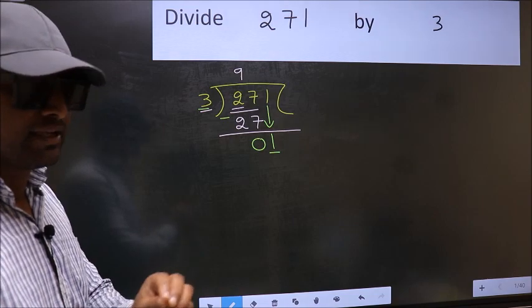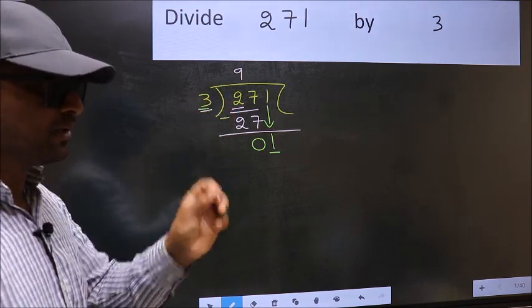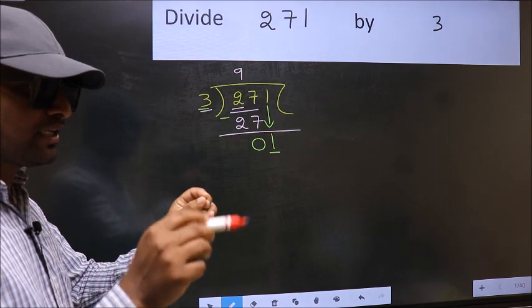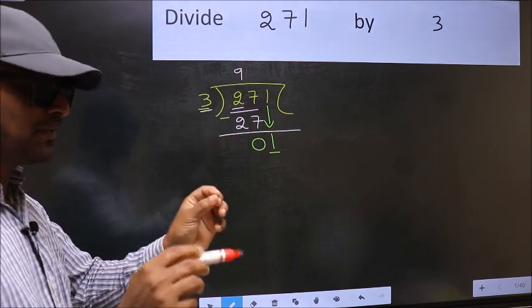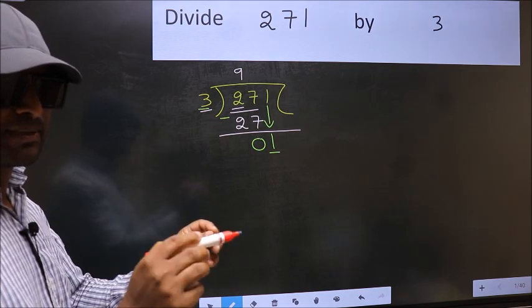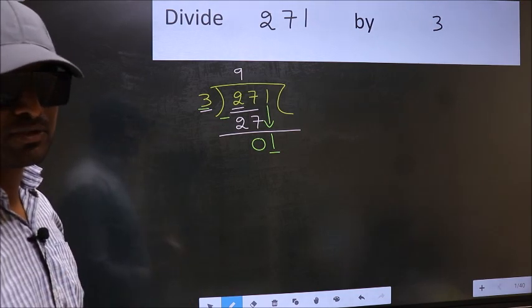I repeat: bringing the number down and also putting a dot and taking 0 - both at the same step - you are not supposed to do.